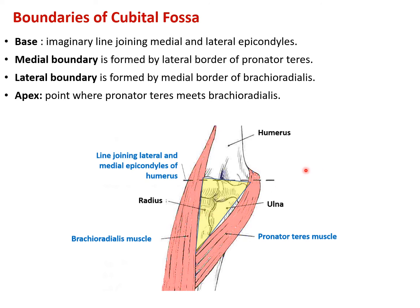In this picture three bones can be seen: humerus, radius, and ulna. As radius is laterally placed in the forearm, this will be the lateral aspect and this will be the medial side. Two muscles can be seen: on the medial side is pronator teres and on the lateral side is brachioradialis. The base is formed by joining the medial epicondyle with the lateral epicondyle of the humerus by an imaginary line.